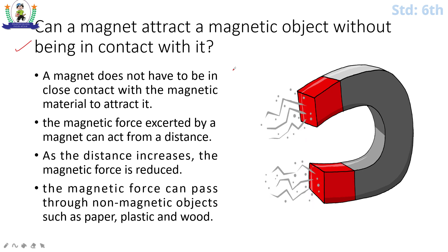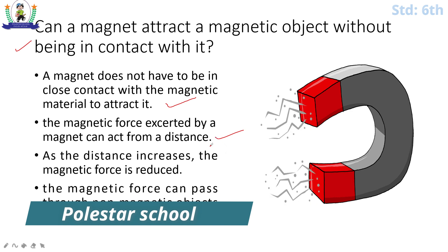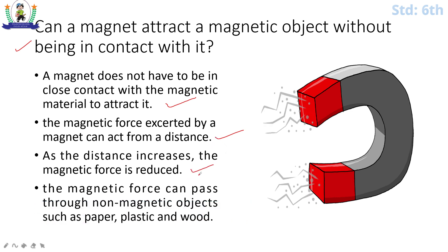So it gets attached because a magnet doesn't have to be in close contact with the magnetic material to attract it. The magnetic force exerted by a magnet can act from a distance. So this is a non-contact force where force is applied without any type of contact. As the distance increases, the magnetic force reduces. So the greater the distance, the less the magnetic force, and the closer the distance to the object, the more the force increases. So magnetic force can pass through non-magnetic objects. Like if there is a table and on top of the table there is an iron nail or pin clip, and you move the magnet from below the table, the iron piece also moves according to the magnet. How amazing is that, right? If you want to do magic, you can do it.